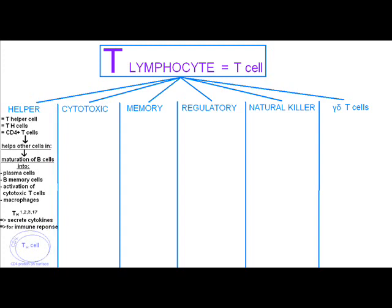First, we'll be talking about the helper, the T helper cell. Helper is equal to T helper cell, or TH cells, or CD4+ T cells — those are three different names with the same meaning. TH cells, or T helper cells, help other cells in maturation of B cells into plasma cells, B memory cells, and activation of cytotoxic T cells and macrophages. That's its function.